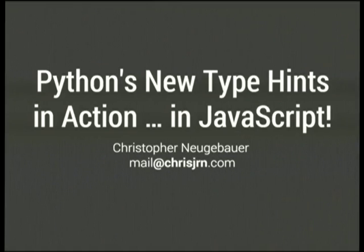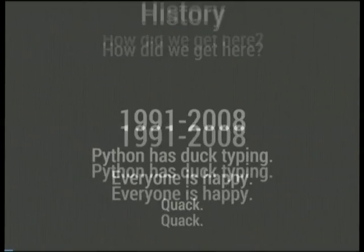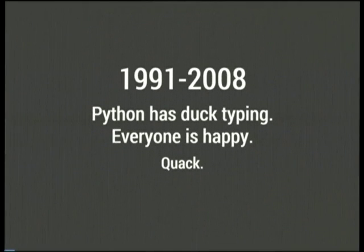I'm here to talk about the type hinting stuff that's about to happen in Python. To do that, we need to start with a bit of history. It's been a long time coming for Python to start getting some degree of static typing. Python started off using duck typing, where you can pass in arbitrary objects in the hope that they have the methods and properties used by the function you're passing to. This was generally a pretty good thing, and we went with this for about the first 17-odd years of Python's existence, and this made pretty much everyone happy.